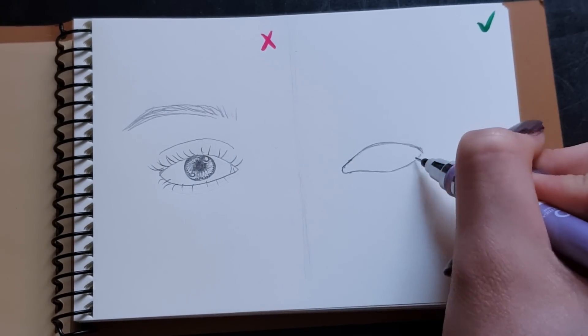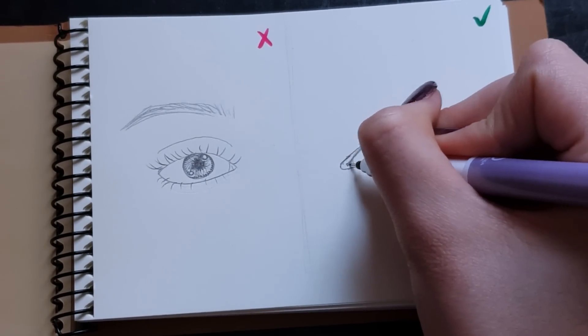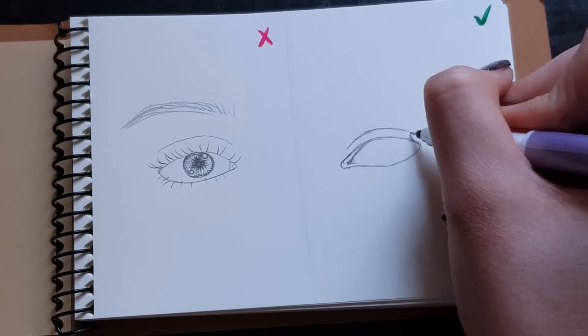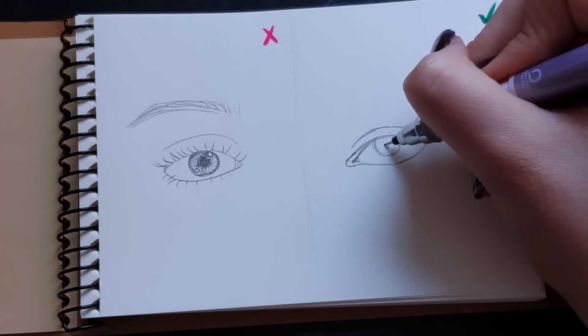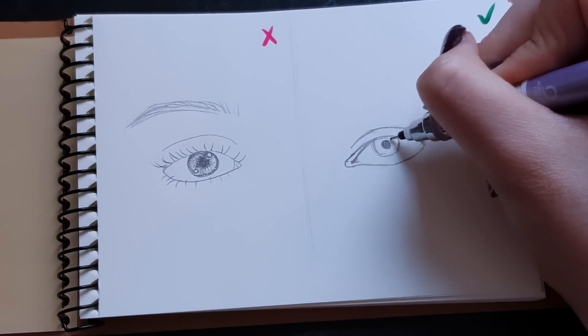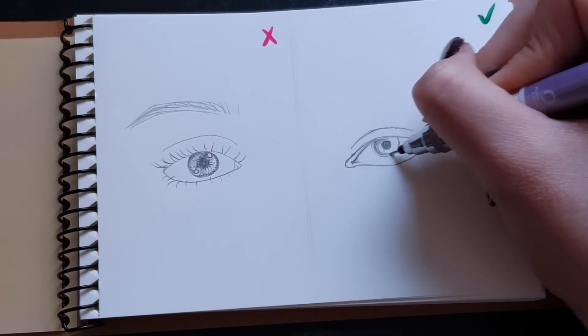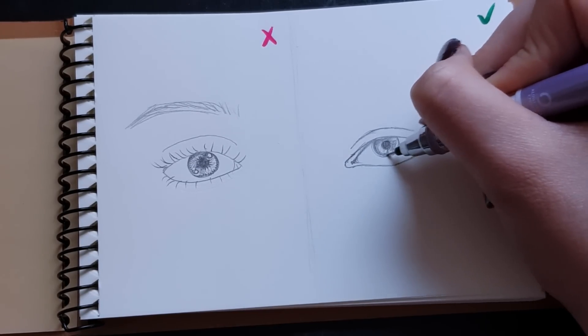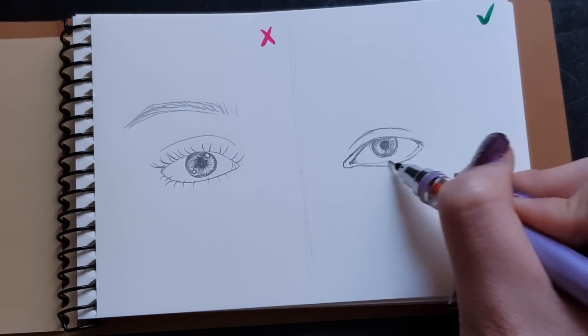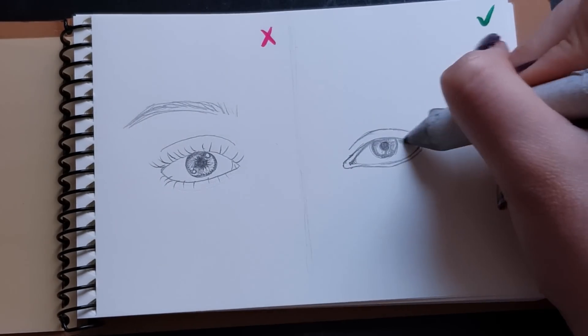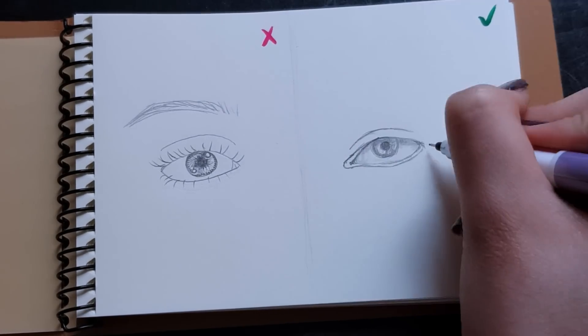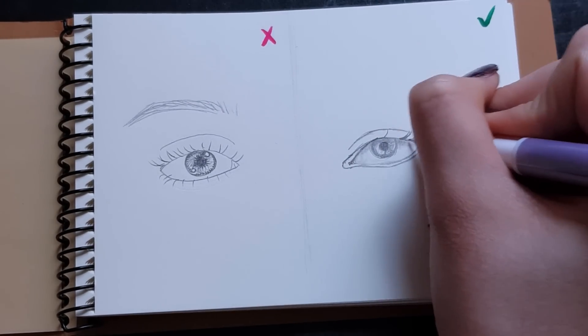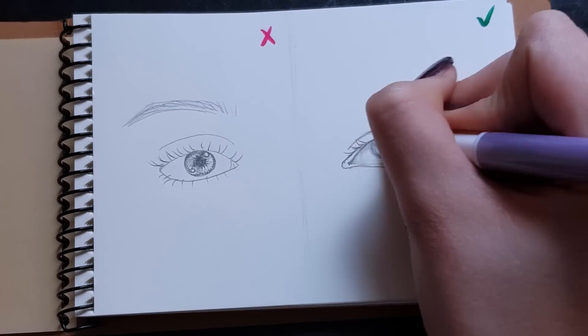What you should do instead is actually pay attention to the waterline and to the inner corner of the eye, because that's one of the important parts in your eye. You also should not make the crease too big and don't forget the crease. The crease is actually a part that folds into your eye so it's not going to be that big. It's kind of small and usually a little dark there because it's folded.